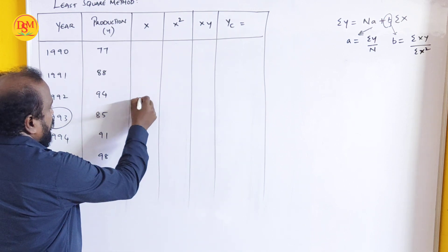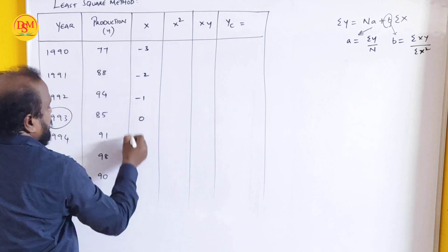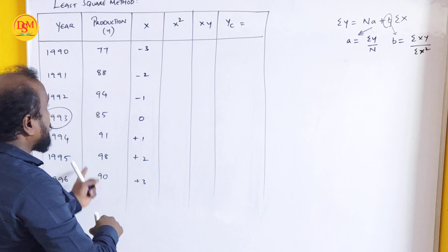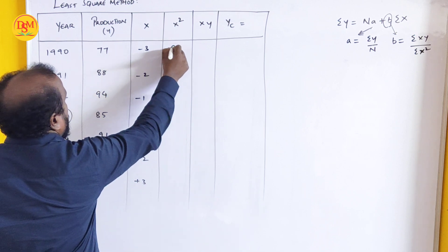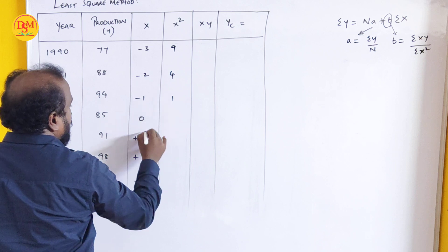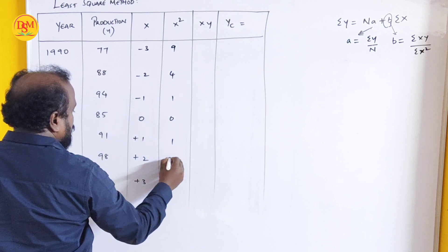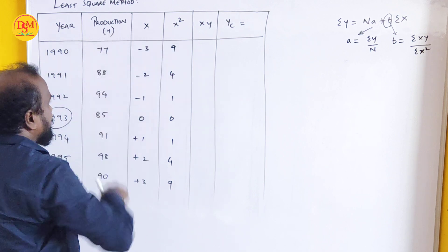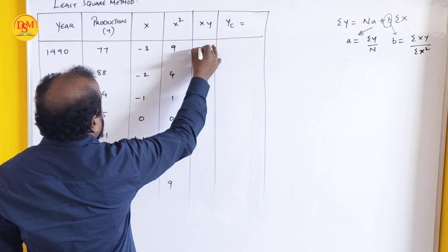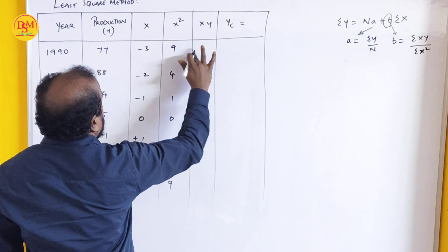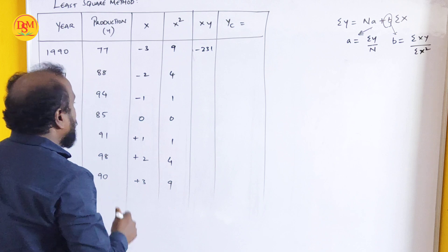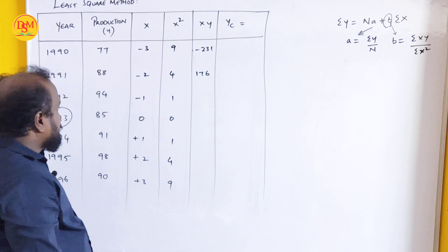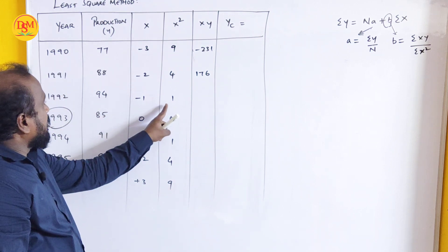What we have to do is x square. Three into three, nine. Two to four, one. One, one, one. Next, x square: three into three is nine, two square is four, one, one, one, zero square is zero, one square is one, two square is four, three square is nine.